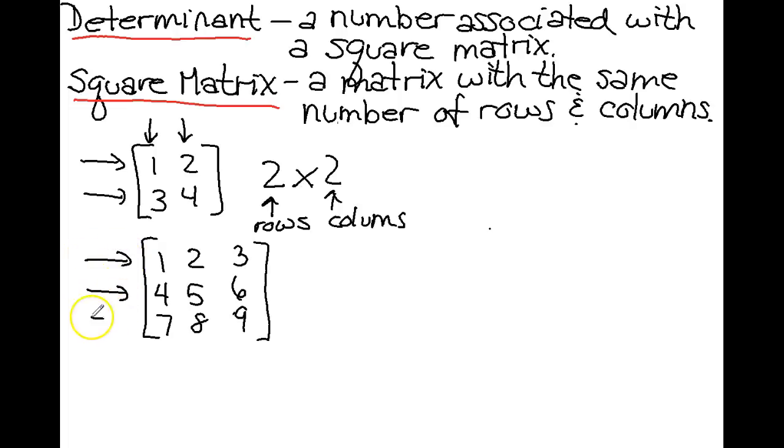So this one has three rows and three columns. So we designate it as a three row by three column matrix. Rows, columns again. Make sure that you always write your rows before your columns. It's important. So both of these are square matrices and we can take determinants of both of these. Remember, a determinant can only be taken on a square matrix.